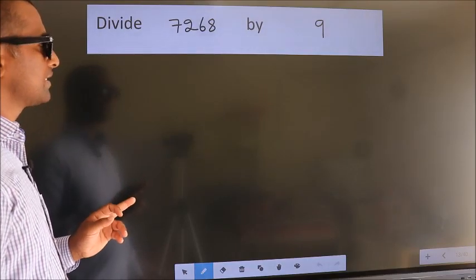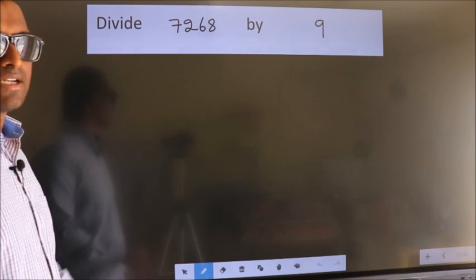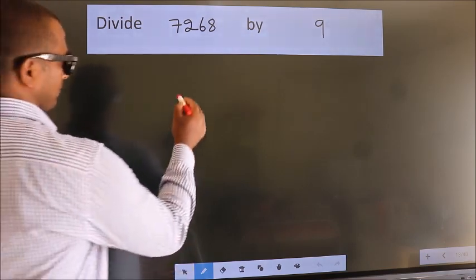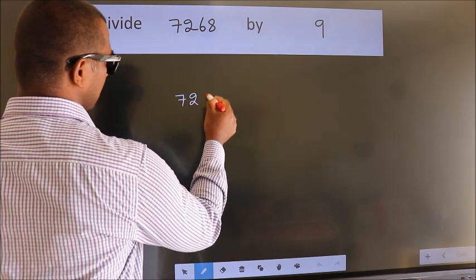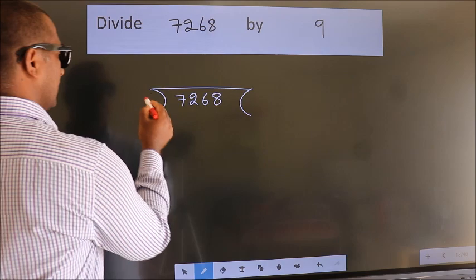Divide 7268 by 9. To do this division, we should frame it in this way: 7268 here, 9 here.